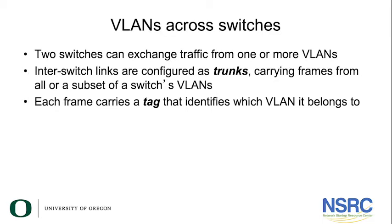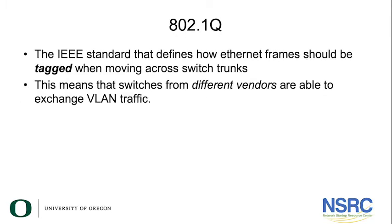Now let's talk about VLANs across switches. Two switches can exchange traffic from one or more VLANs. The inter-switch links are configured as trunks, which carry frames from all or a subset of a switch's VLANs. Each frame carries a tag that identifies the VLAN it belongs to — you can think of the tag as a sticky note with just the VLAN number. 802.1Q is the IEEE standard that defines how Ethernet frames should be tagged when moving across switch trunks, meaning all switches that support 802.1Q from different vendors can exchange VLAN traffic with no problem.